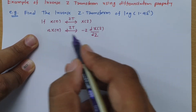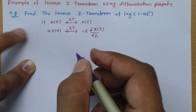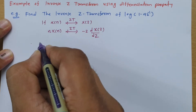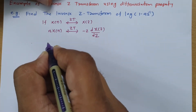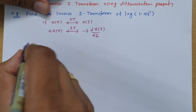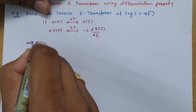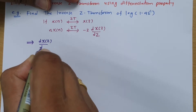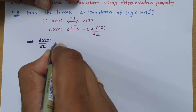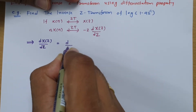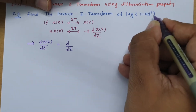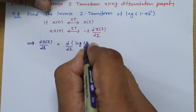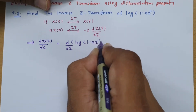So in this problem we need to first do the operation dX(z)/dz, then multiply -z with it, take the inverse z-transform, and from that we can find x(n). Here X(z) is given to us, so let us first do the basic operation dX(z)/dz, which is d/dz of log(1 - az⁻¹).